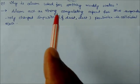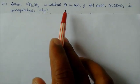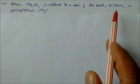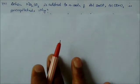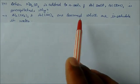When sodium carbonate is added to a solution of aluminum salt, Al(OH)3 is precipitated. Aluminum carbonate and aluminum hydroxide are formed which are insoluble in water, so they emerge as a precipitate.